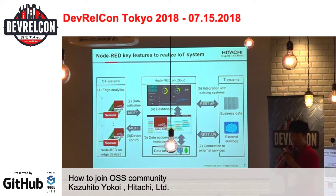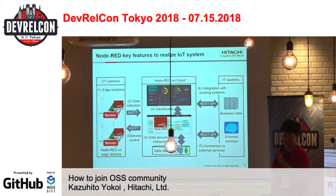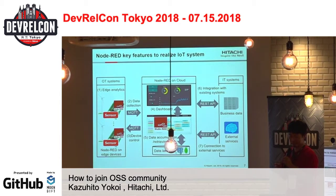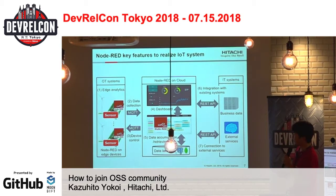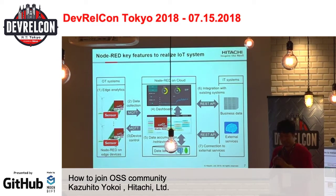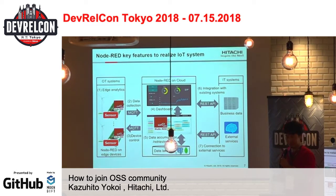This slide shows Node-RED key features. In a typical IoT system, there are seven key features for Node-RED. First is edge analytics. As you know, edge devices have sensors, cameras, and microphones. Node-RED can retrieve data from sensor devices, and Node-RED can filter or analyze the data. For example, an OpenCV connector can detect human faces from image data. And second and third are data collection and device control. Node-RED supports MQTT protocol, so Node-RED on the cloud can collect sensor data and control edge devices.